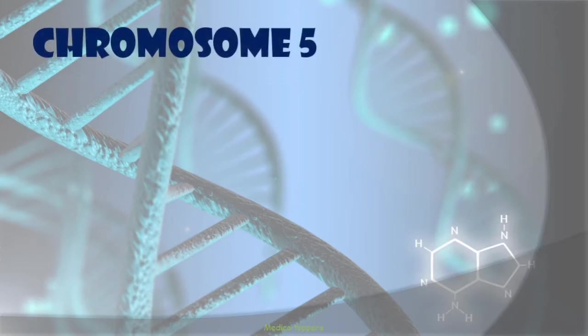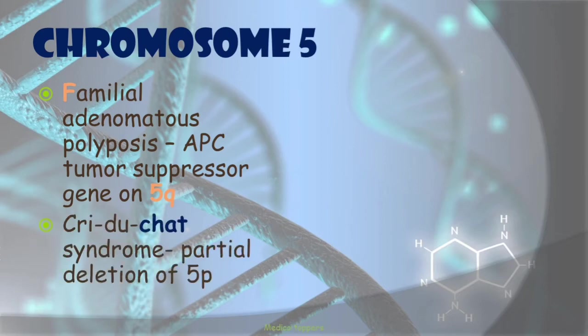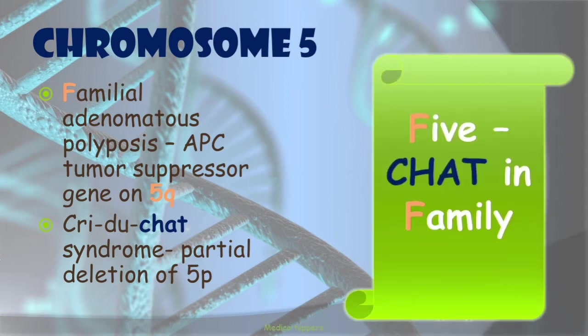Then comes chromosome 5. The diseases are Familial Adenomatous Polyposis, caused by the APC tumor suppressor gene on 5q, and Cri-du-Chat syndrome, due to partial deletion of 5p. The mnemonic: '5 members sit and chat in a family.' So 'chat' is for Cri-du-Chat syndrome and 'family' is for Familial Adenomatous Polyposis.